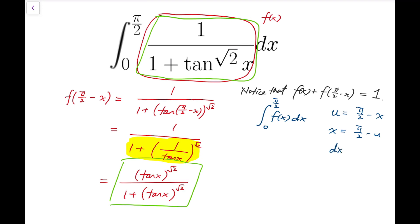Now for the differential, dx is equal to negative du. And if I were to change the entire integral, I have to change the limits as well. When x is 0, then u is pi over 2. When x is pi over 2, then u is 0.